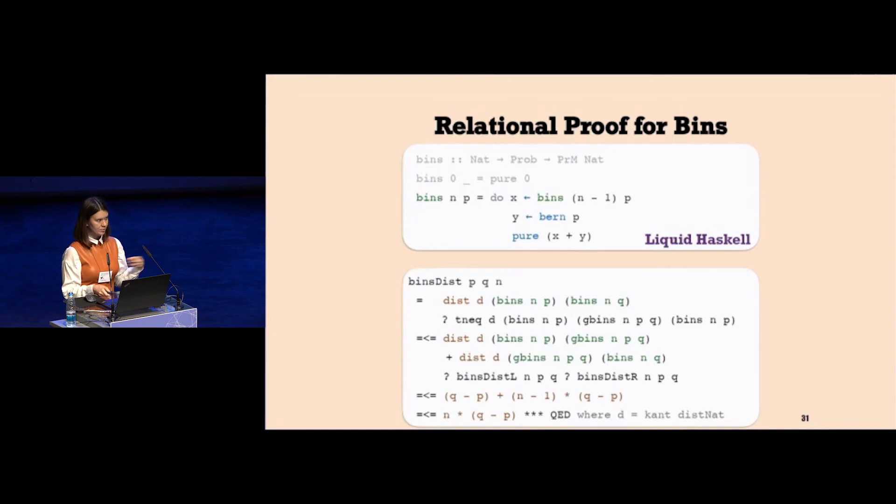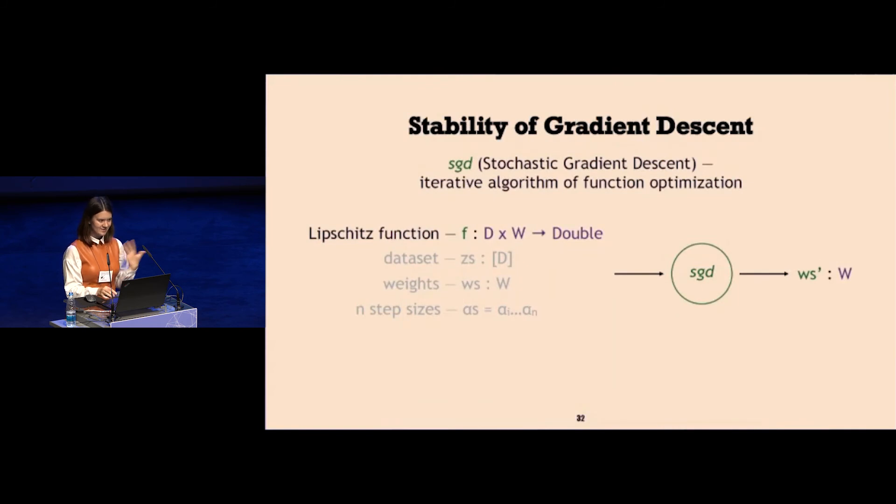That concludes the proof for bins. Now I promised machine learning algorithms. I'm going to explain stochastic gradient descent, which is very popular, widely used classic algorithm from machine learning. It's an algorithm for function optimization which takes four arguments. First of them is a goal function. I call it Lipschitz. It has two parameters: the data point and a vector of weights, returns a double. Our goal is to make the function output better results on data points, and we can achieve that by adjusting weights. So we want to find a good weight for the function.